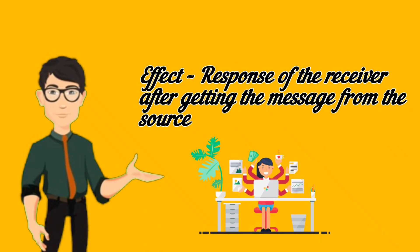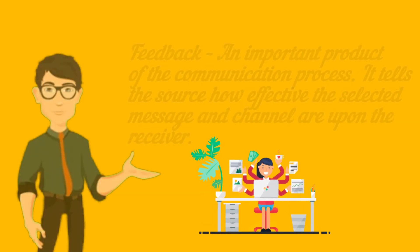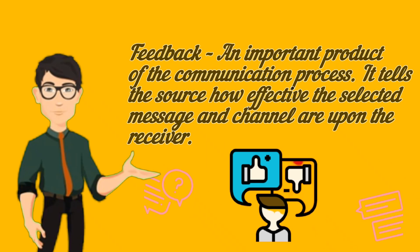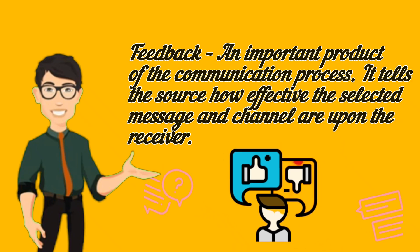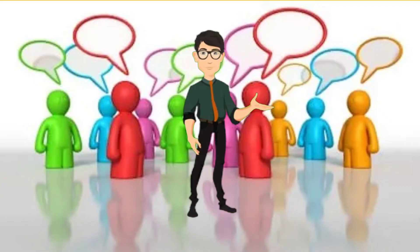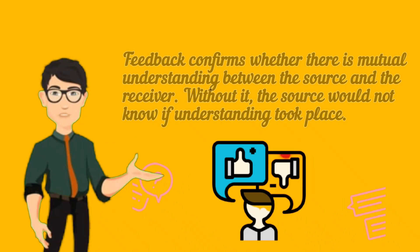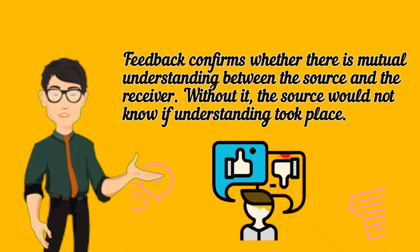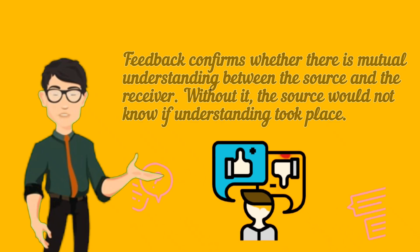Effect is the response of the receiver after getting the message from the source. Feedback is an important product of the communication process. It tells the source how effective the selected message and channel are upon the receiver. Furthermore, it allows the source to adjust the communication process so that it is more effective. Feedback confirms whether there is mutual understanding between the source and the receiver. Without it, the source would not know if understanding took place.